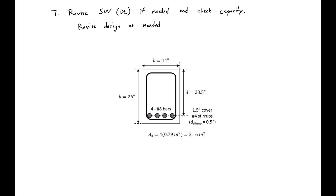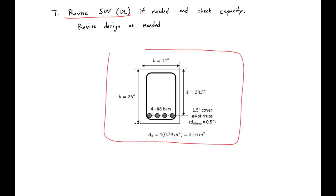Our last step is to revise the self-weight if needed and recheck the capacity, revising the design as needed. In this example, our self-weight was included in the given dead load, so we're not going to revise that. We have our final section, designed to satisfy the span and loading requirements given at the beginning.